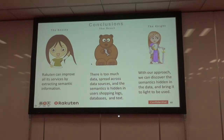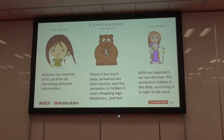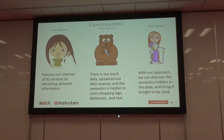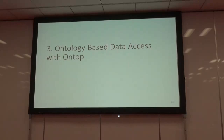In conclusion, Rakuten and all its companies can improve their services by extracting semantic information and using it across tasks — marketing, recommendation, and catalog. The challenge is that there is too much data spread across different data sources: relational databases, JSON databases, key-value stores, CSV files. Semantics can also be used for integrating this data. Even though semantics is often hidden — encoded in numbers or elsewhere — with our approach we can discover that semantics, bring it to light, and provide it to different departments for their use.